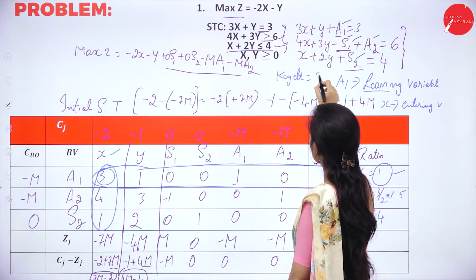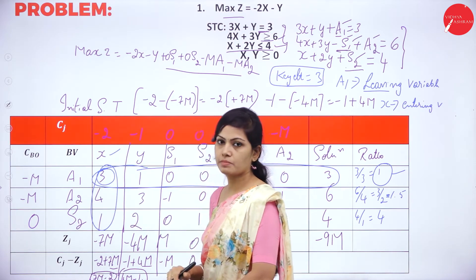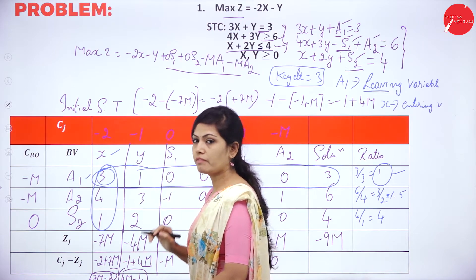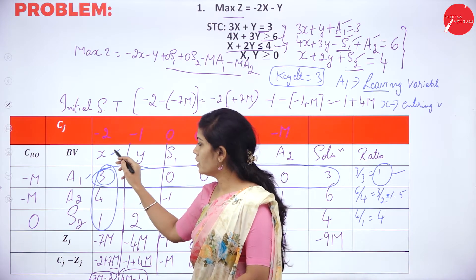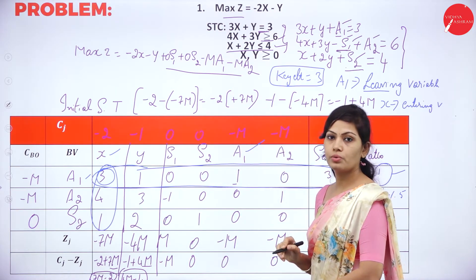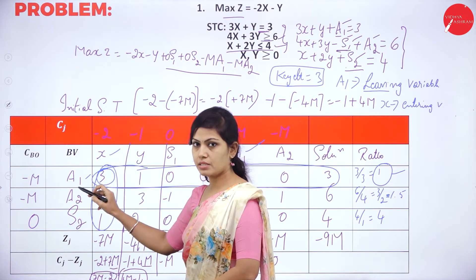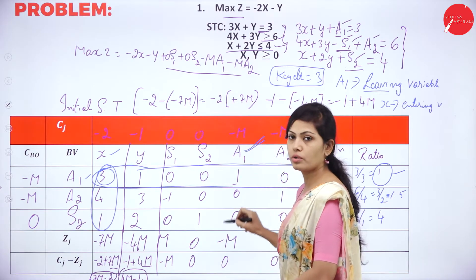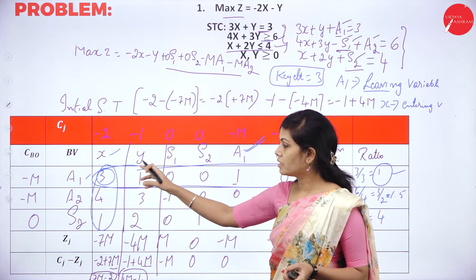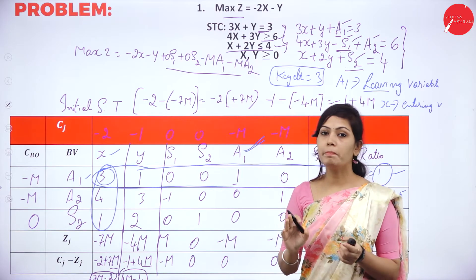In iteration 1, replace a1 with x. In place of a1, I add x in the basis, and I also delete the a1 row and a1 column simultaneously. This is the Big M method technique — whenever an artificial variable leaves the basis, you delete its row and its column. So I am deleting both the a1 row and a1 column.